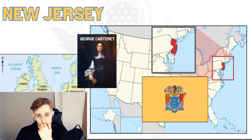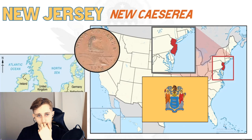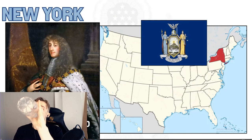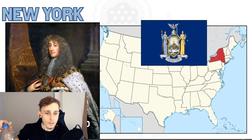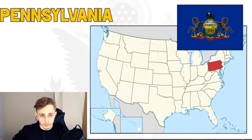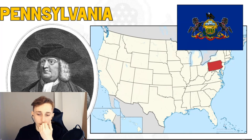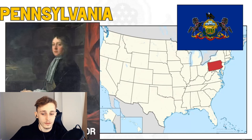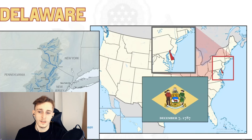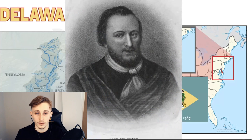New York continues this trend, being named after the then Duke of York, later King James II of England — both after the English town and its duke. Pennsylvania was named by an English writer who founded a province as an English colony in honor of his father, combining their surname 'Penn' with the Latin term 'sylvania,' meaning 'woodlands.' Delaware gets its name from the Delaware River, which was named after Lord De La Warr, the first governor-general of the Colony of Virginia.